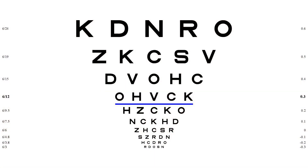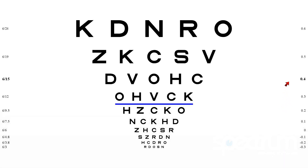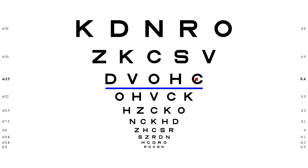You'll notice that the score increases as the vision gets worse, so 0.3 is better than 0.34. If they missed three on this line, then it would have been 0.36. Missing four would have been 0.38, and missing all the letters would have taken you up to 0.4, which effectively is the 6/15 line as we understand it.